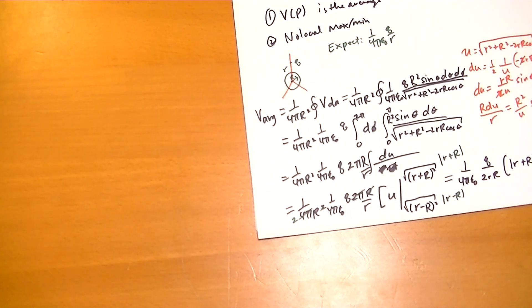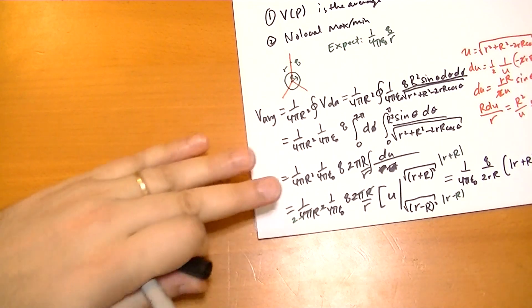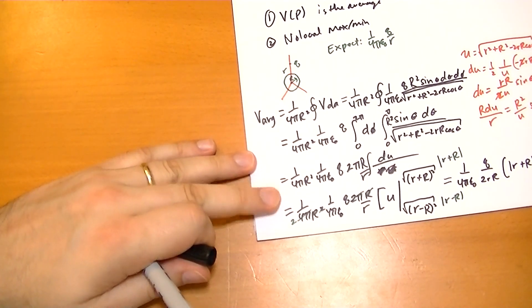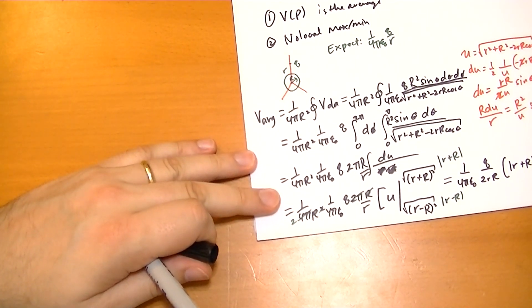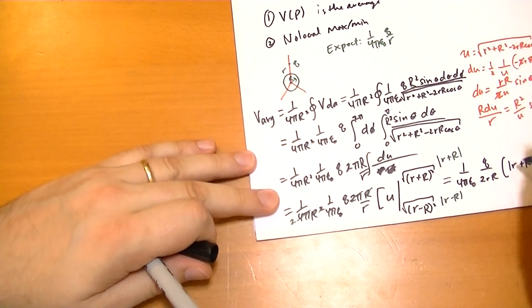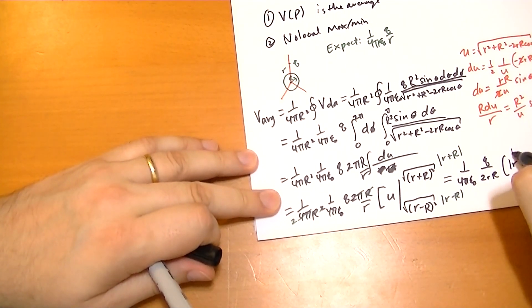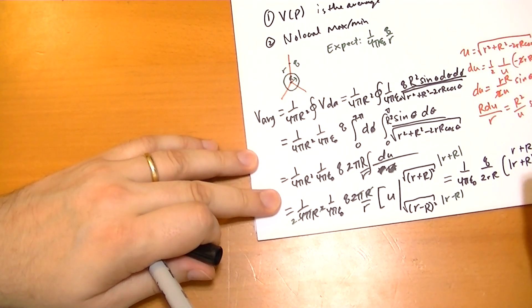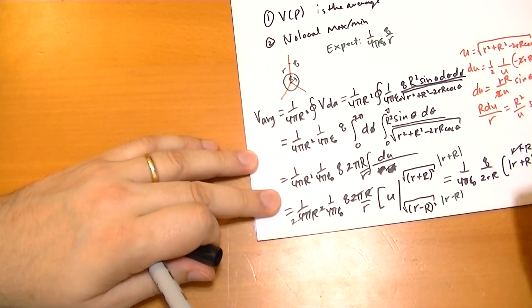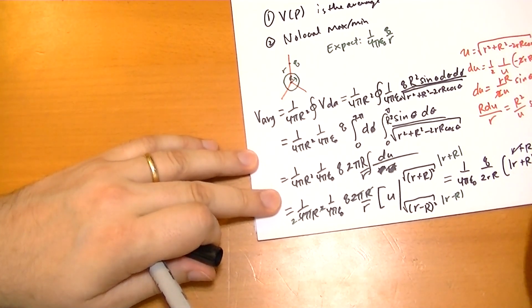Now, as long as little r is bigger than big R, this is going to be positive on the inside. So it's going to be equal to the positive of this. And the same for this. This is always going to be positive unless we start going negative, which we're not. So it becomes r plus R minus r plus R because we distribute that minus sign. And so, these two cancel, and we have 2r.